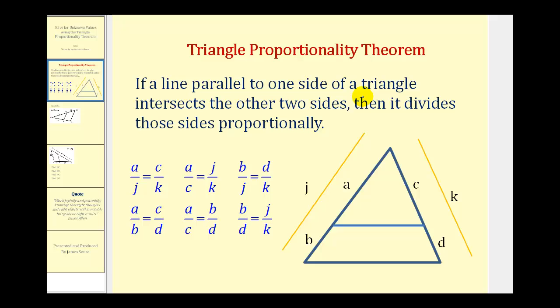If a parallel line to one side of a triangle intersects the two other sides, this would be the parallel line that intersects the two sides, then it divides those sides proportionally. As you can see, I listed six different proportions that are true, which is a result of either this theorem or that the small triangle and the large triangle are similar.